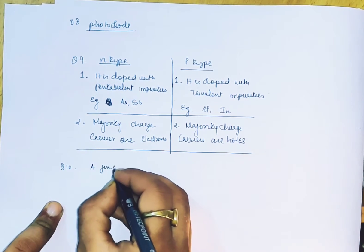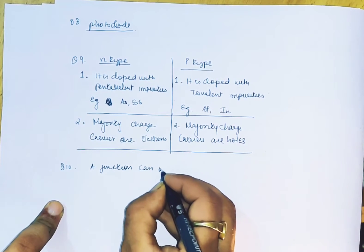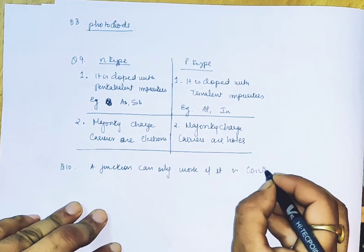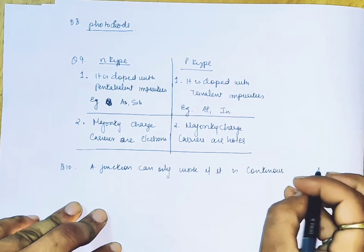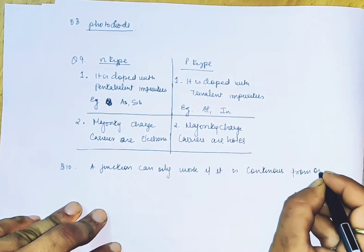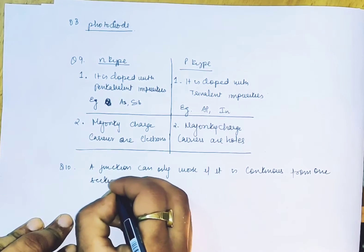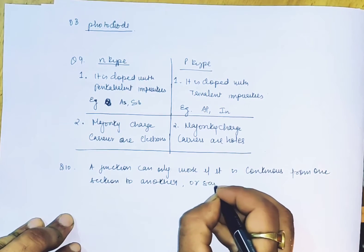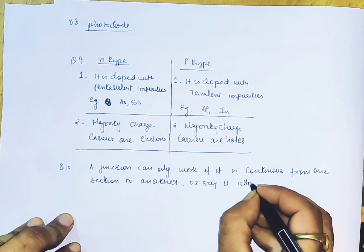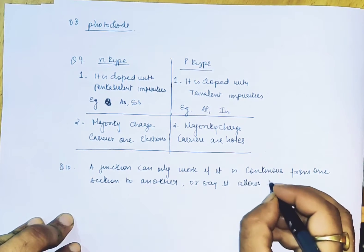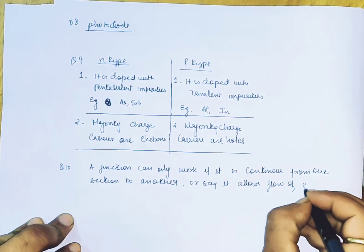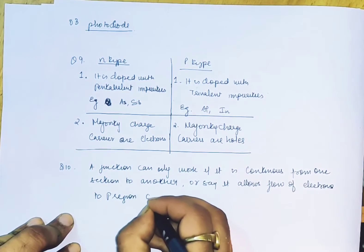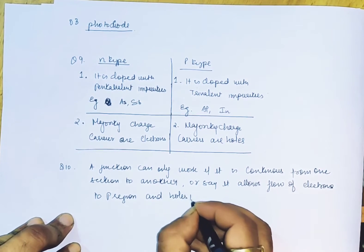A junction can only work if it is continuous from one section to another, or say it allows flow of electrons to p-region and holes to n-region.